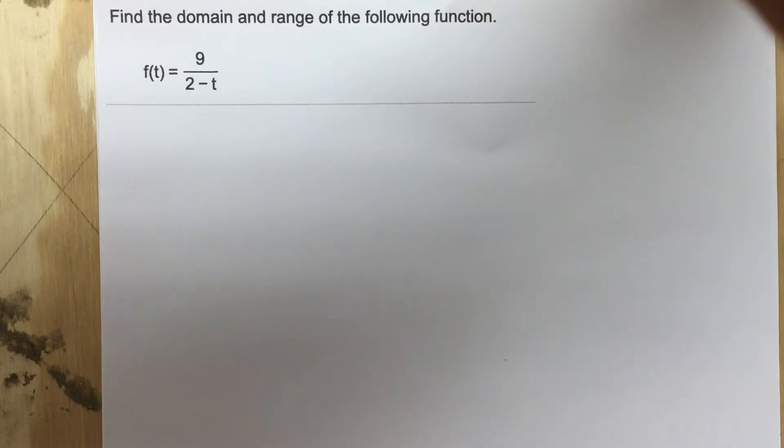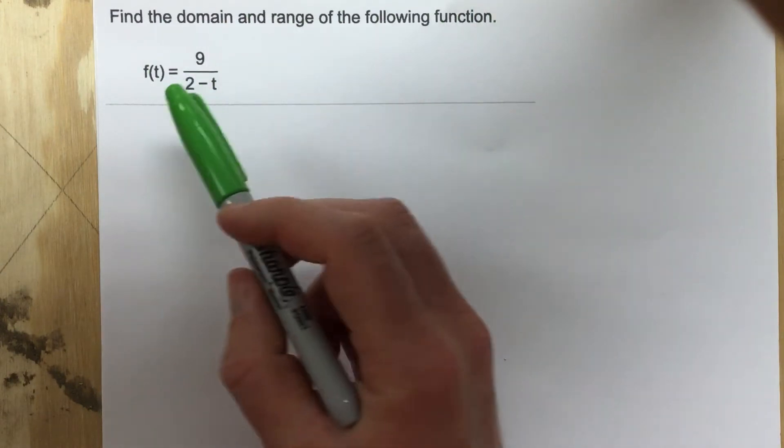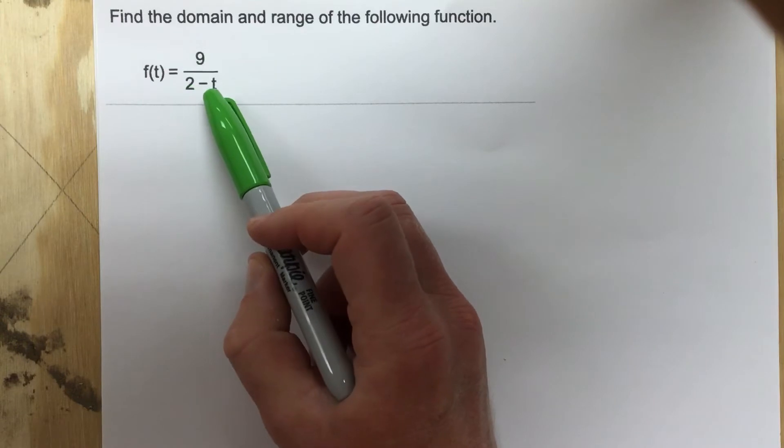This is problem number 3 from section 1.1. In this problem it says find the domain and range of the following function and they give you the function f of t equals 9 over 2 minus t.